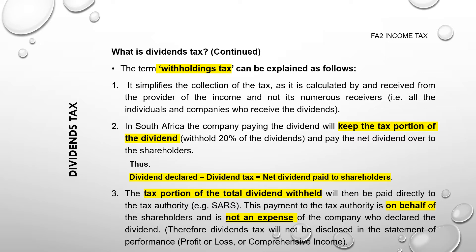The term 'withholding tax' applies to both employees' tax and dividends tax. It means that the company has the duty to withhold or subtract the tax before paying over the net amount to either the employees or the shareholders. The tax is not levied on the company — in the case of dividends tax it is levied on the shareholders. This means that even though the company pays over the tax on behalf of the shareholders, it is not an expense to the company. Dividends tax will therefore not be found in your statement of performance, whether it is a statement of profit and loss or total comprehensive income.